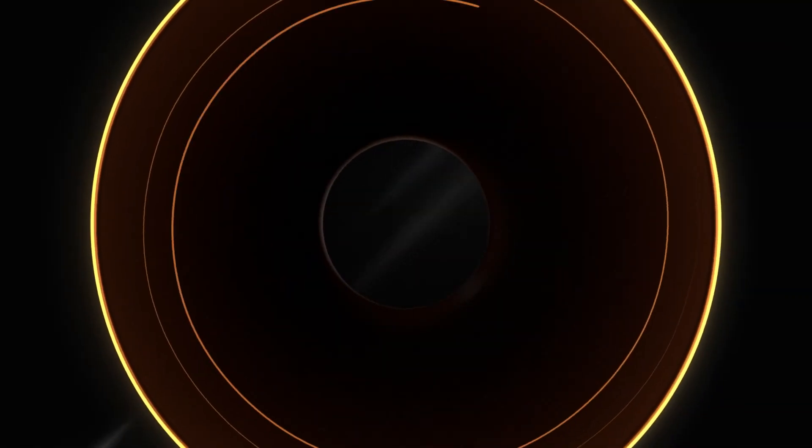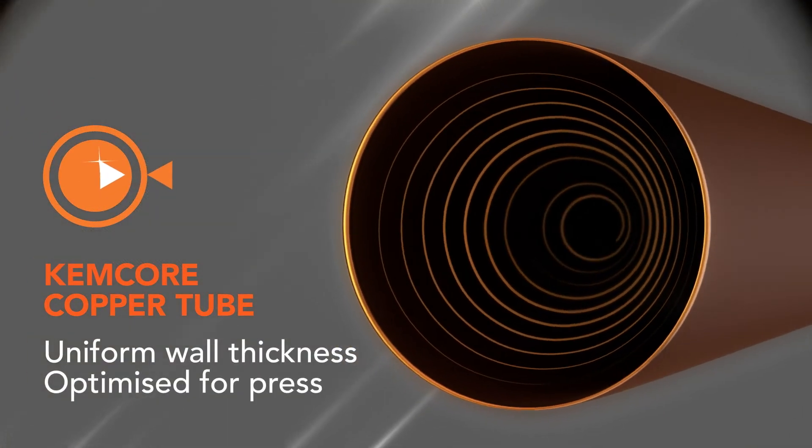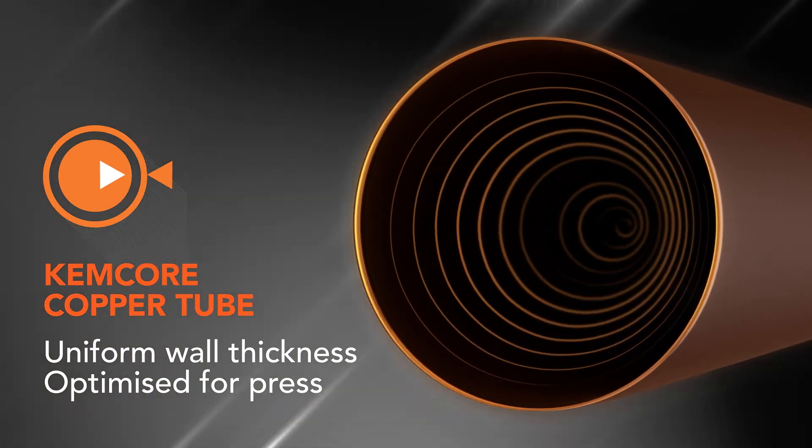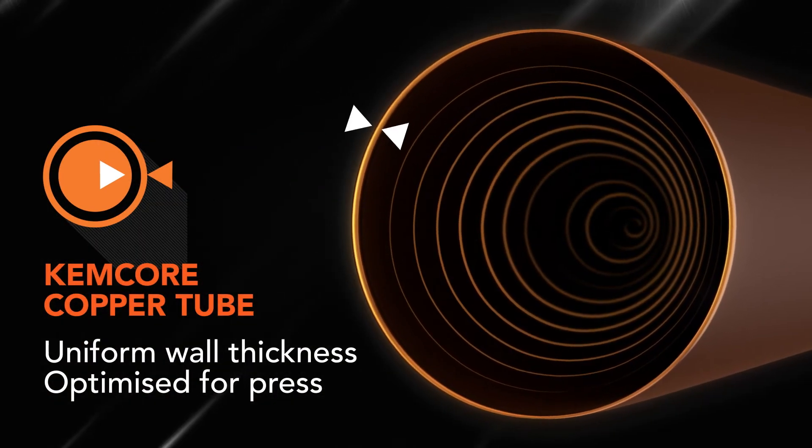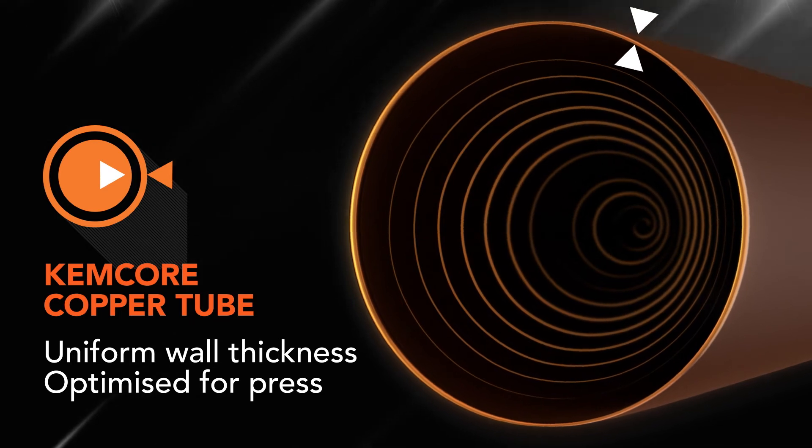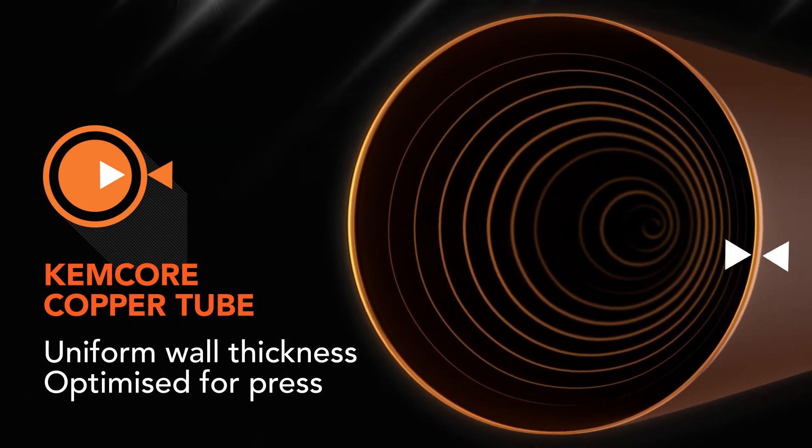For the best press fit installation you need Kembla copper tube manufactured using a unique Kemcore eccentricity control system for superior wall thickness control and optimum press performance.